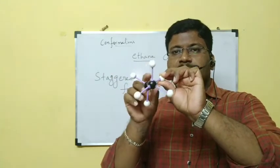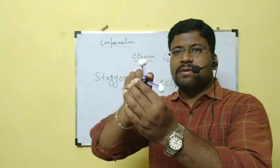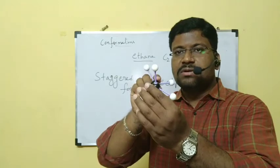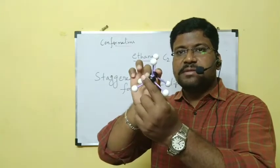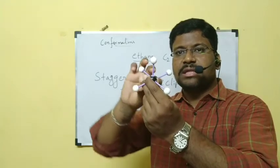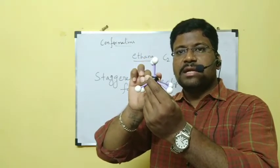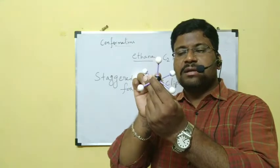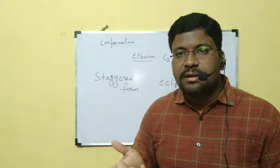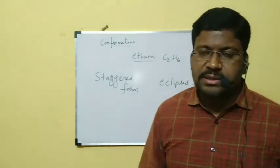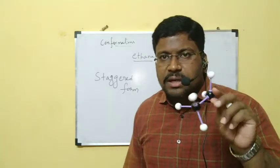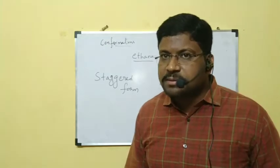This form is called staggered form. Starting from eclipsed form, rotating like this, I got staggered form. If I rotate again, I get eclipsed form again; rotate further, staggered form again. So staggered form and eclipsed form are very familiar out of the infinity number of forms for ethane.